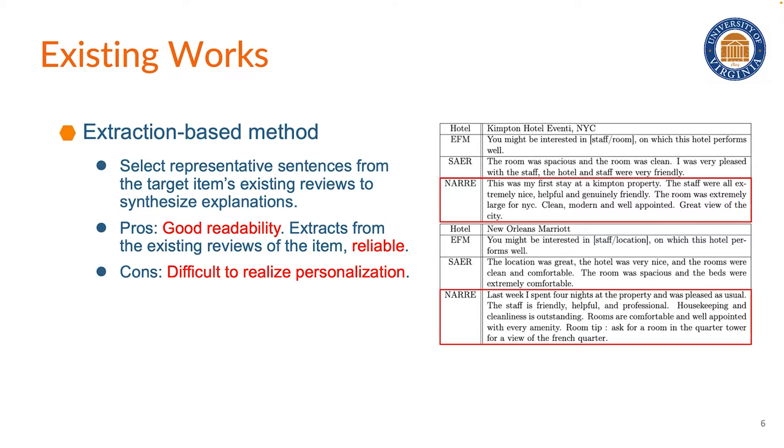However, if we extract sentences on the sentence level, which means that we use the sentence in reviews on the target item to construct an explanation, we will then need to face the sparsity issue between user-item pair and sentences, and this will make it difficult to learn the relationship between user-item pair and sentence, resulting in a personalization problem.